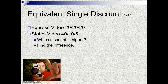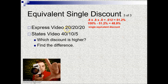Let's look at one more example. Express Video is offering a series discount of 20/20/20, and States Video is offering a 40/10/5 series discount. We're asked which discount is higher. Using the same steps, we find the complement of each discount in the series. The complement of 20% is 80%, so it's 0.8 × 0.8 × 0.8. The product of the complements is 51.2%, meaning that's what they would be paying of the base price.